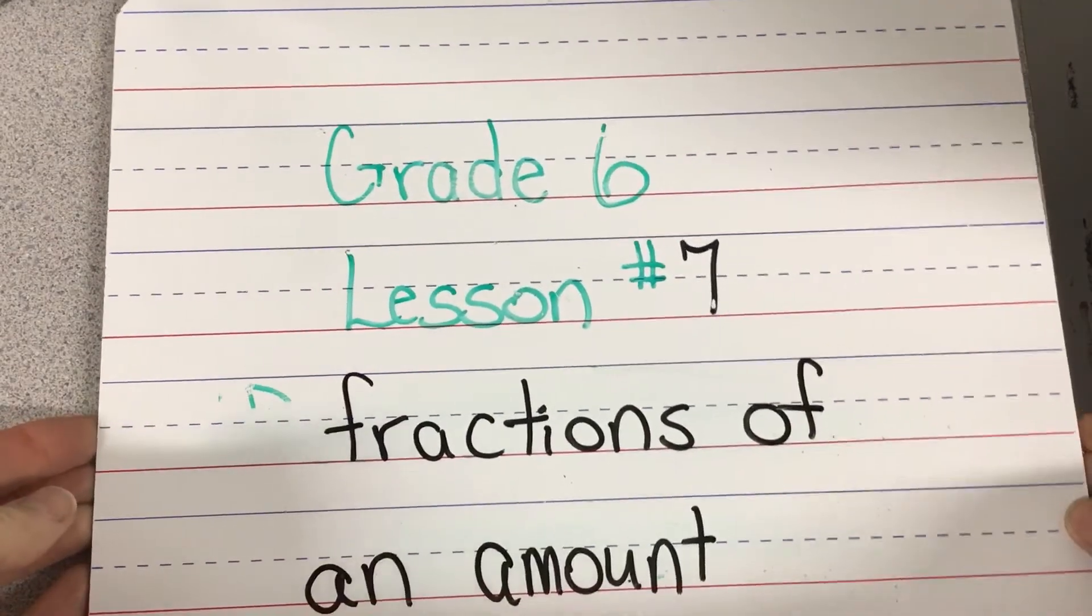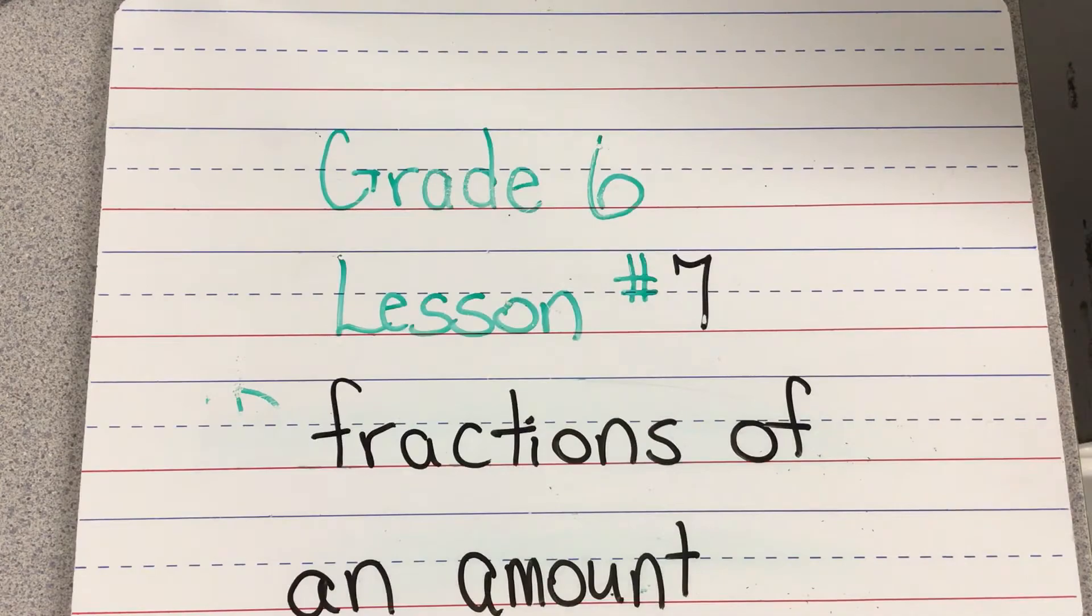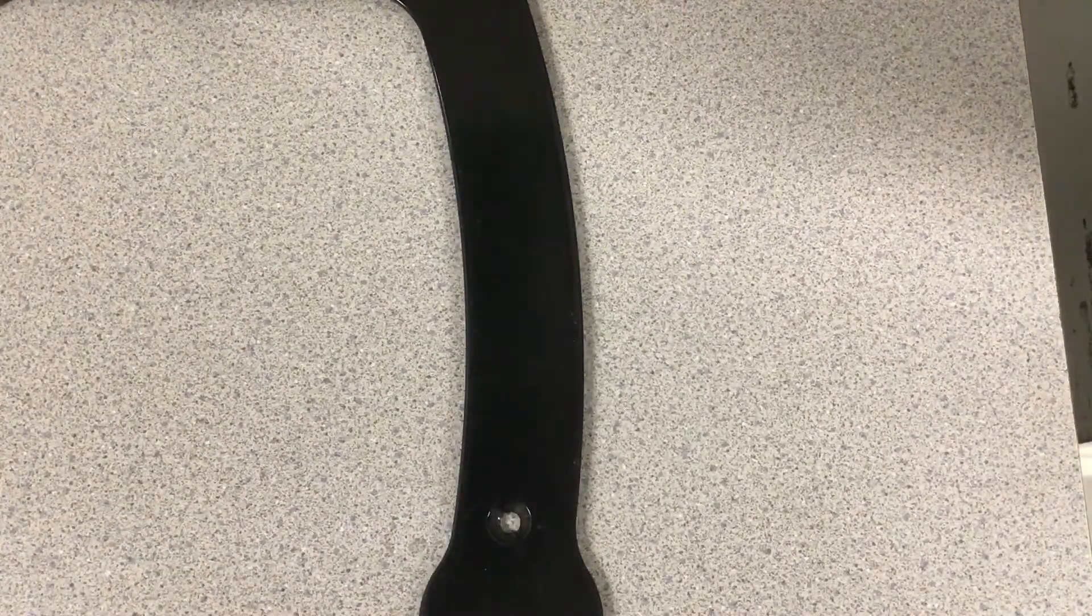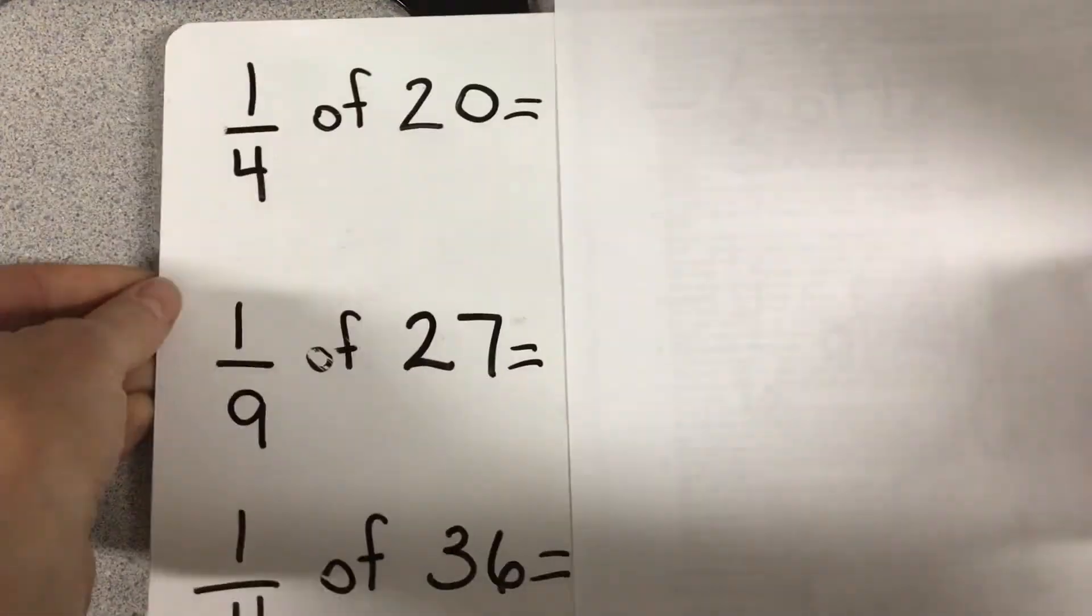All right grade sixes, this is lesson number seven going over fractions of an amount. It's not really tricky, but it's about following steps, like following a recipe. You gotta do the steps to figure it out, so I'm gonna go over the steps right now.